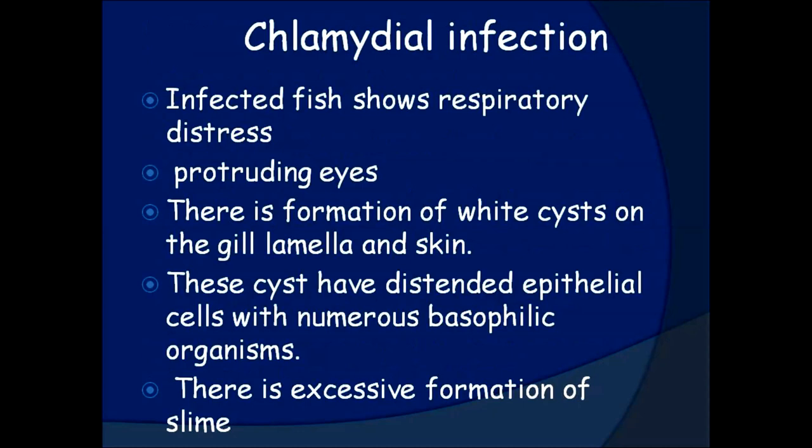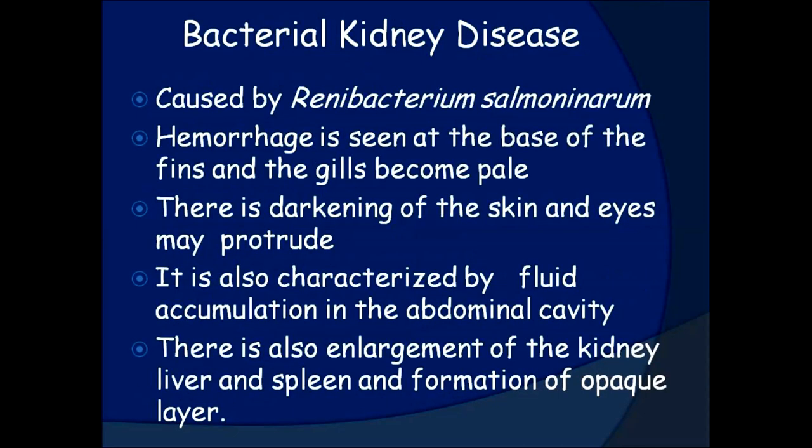Chlamydial infection. Infected fish show respiratory distress and protruding eyes. There is formation of white cysts on the gill lamella and skin. These cysts have distended epithelial cells with numerous basophilic organisms. There is excessive formation of slime.